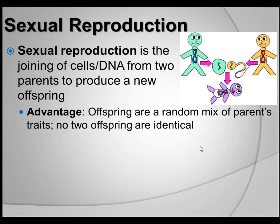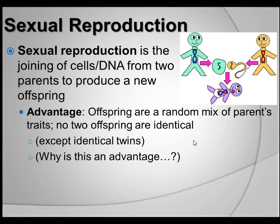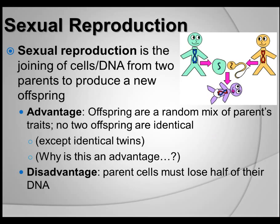There's a huge advantage to this. Offspring are a random mix of the parent's traits, and you don't get any two that are identical — with the exception of identical twins. Why is it advantageous that no two offspring are identical? There's also a disadvantage: the parents actually lose half of their DNA. Half the DNA doesn't get passed on. Good — none of them are identical. Bad — you actually lose half the DNA; it doesn't make it to the next generation in that child.